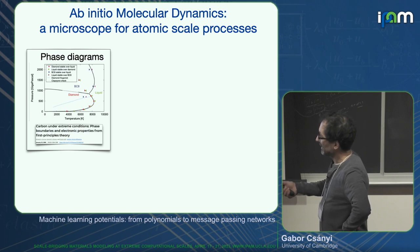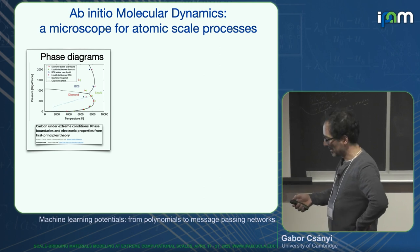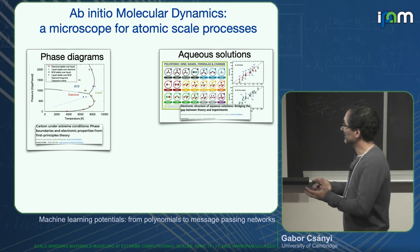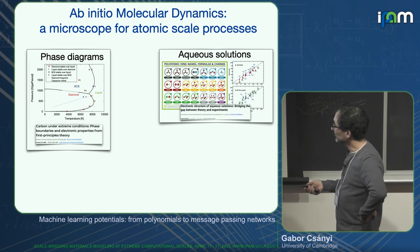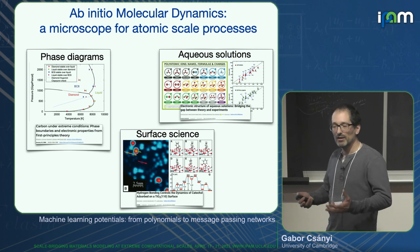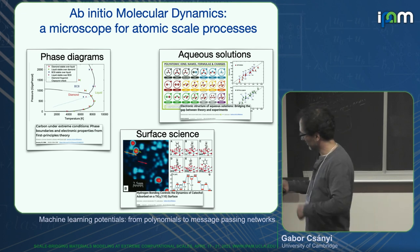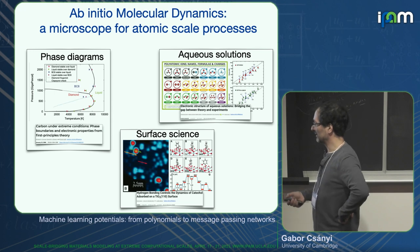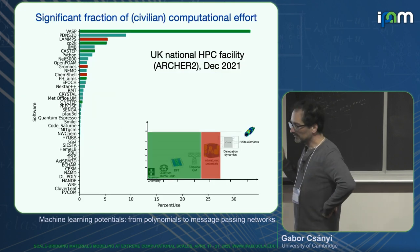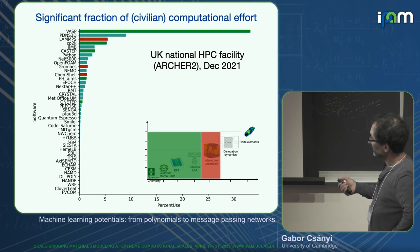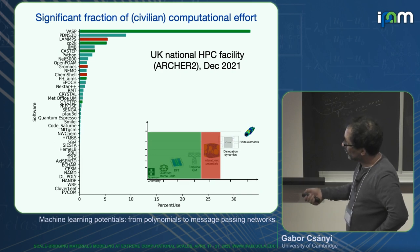For example: phase diagrams under extreme conditions — this is the carbon phase diagram up to thousands of gigapascals and thousands of Kelvin. Aqueous solutions of polyatomic ions, solvation structure, diffusivity — everything you want to know about solvated chemistry in atomistic detail. Surface science has been revolutionized by ab initio MD. Here's a titanium surface with a molecule adsorbed on it; you can identify experimentally all the conformations and study them in atomistic detail beyond what experiment can provide. Lots of people are doing this.